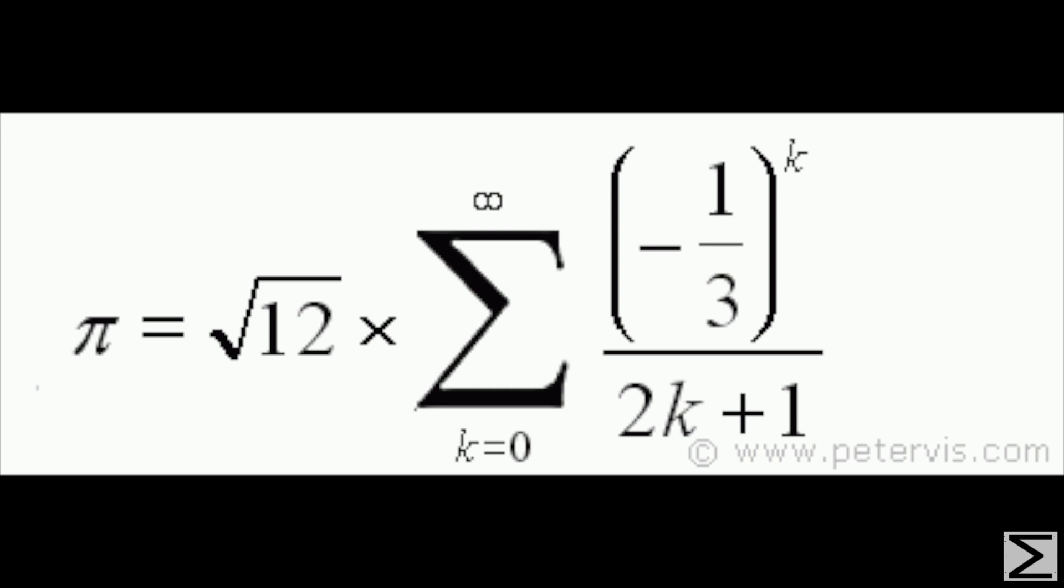This can be simplified as the square root of 12 times the sum of infinite series of 1 over 2n minus 1 times 3 to the n minus 1 for all positive integers.